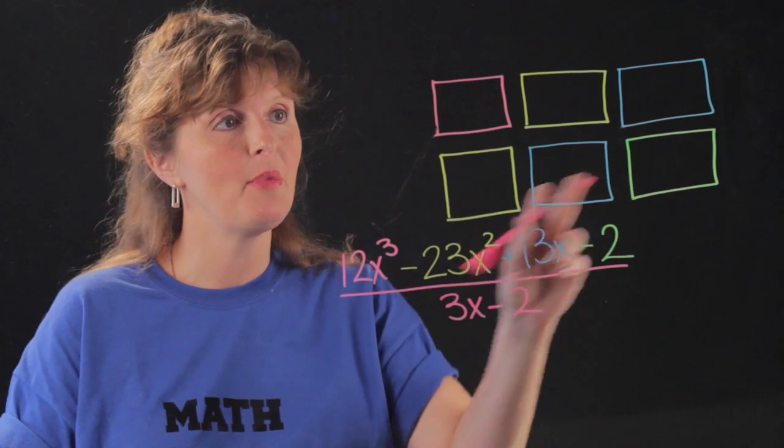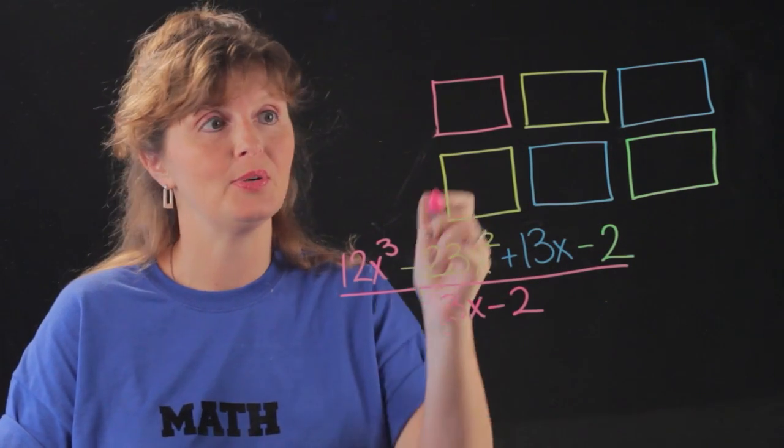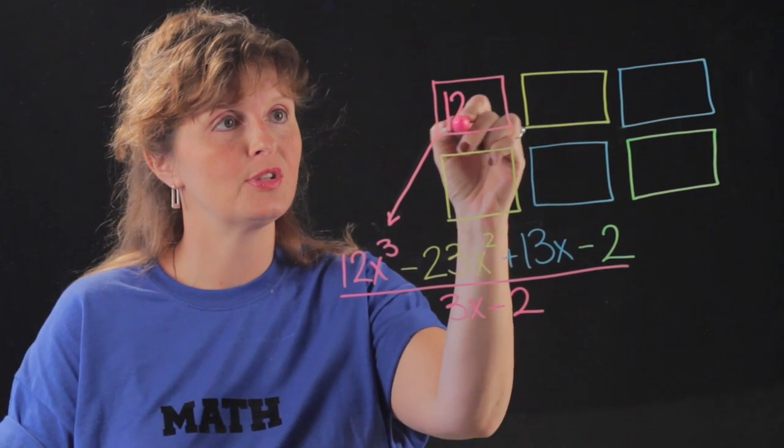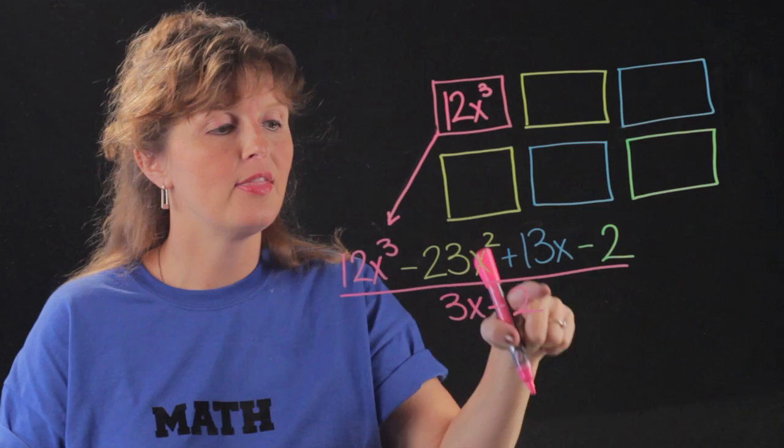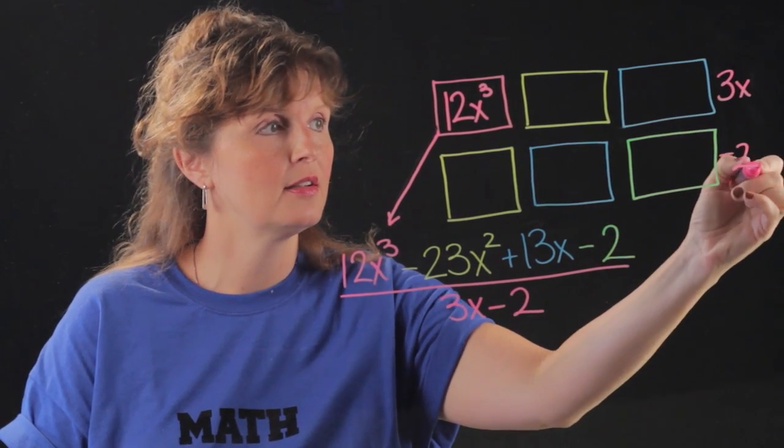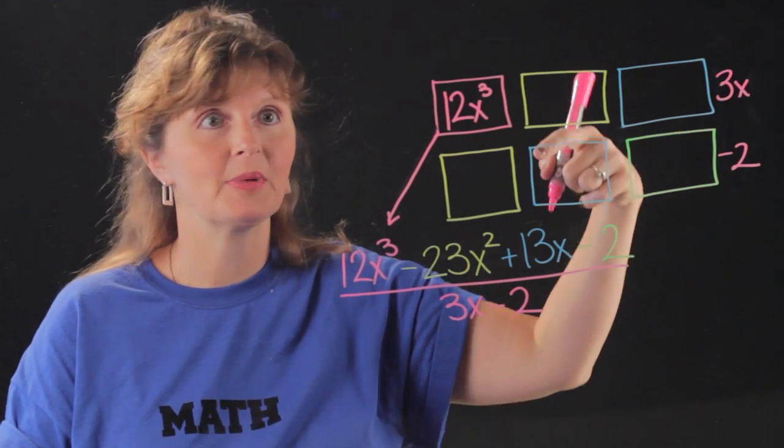So here I have my boxes laid out and if you'll notice they're color coded. The 12x³ goes here and what I'm going to do is have this piece along the side and I'm going to treat this kind of like a regular multiplication table.